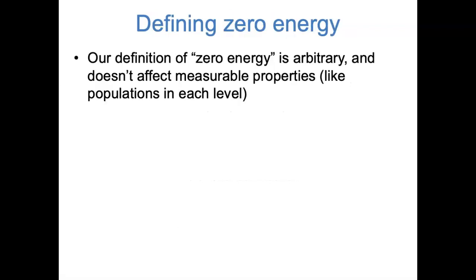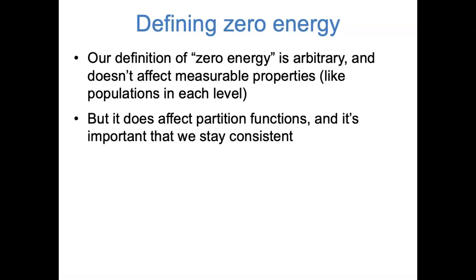Before we move on to different types of motion, I'd like to make a brief note about how we're defining energy. Our definition of zero energy is arbitrary, and it's really only the relative energies that are meaningful — you've probably already seen this in other areas of physics, such as gravitational potential energy. The way we define zero energy is not going to affect any measurable properties like populations of energy levels or the heat capacity, but it does affect the partition function, and we must stay consistent throughout a calculation.